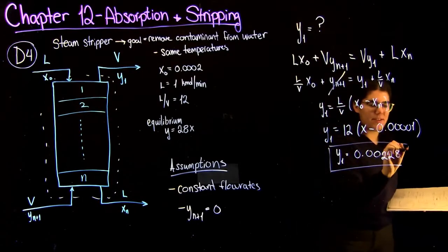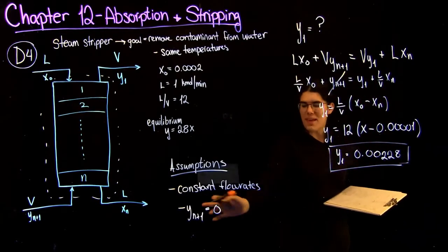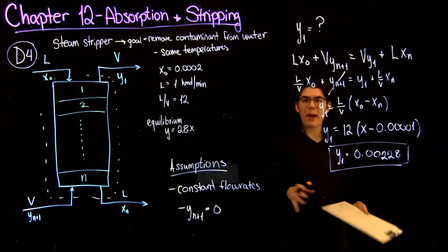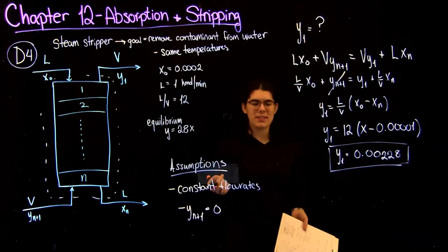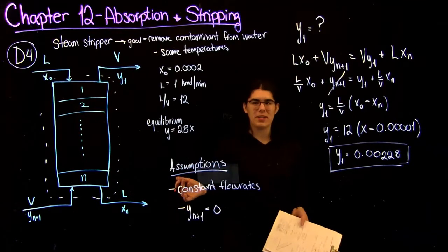So like I said, this is a dilute system, so it should be a really small number, and it kind of just confirms that our assumption of constant flow rates was okay for this case. So to find the number of stages, you're going to do a McCabe-Thiel diagram just like you do for a distillation column.